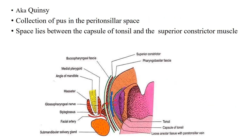Peritonsillar abscess is also known as Quincy. It is the collection of pus in the peritonsillar space which lies between the capsule of the tonsil and the superior constrictor muscle.